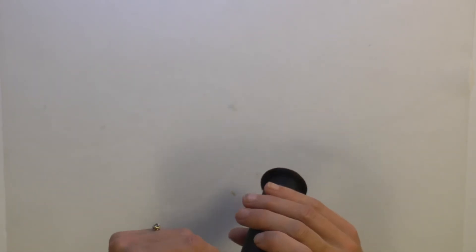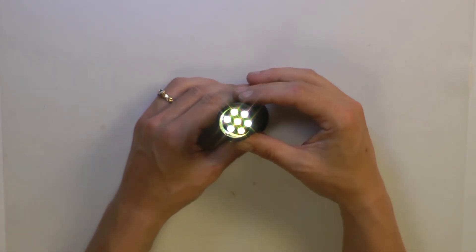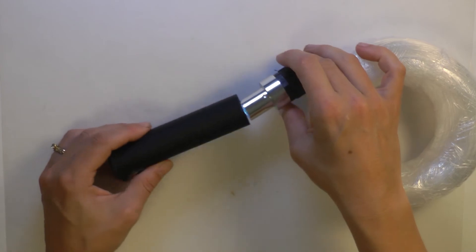Place the NeoPixel jewel inside the handle so it aligns with the ridge inside the case. Be sure everything still works and make sure you didn't knock any wires loose.